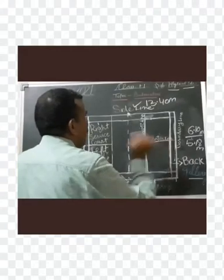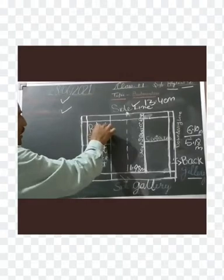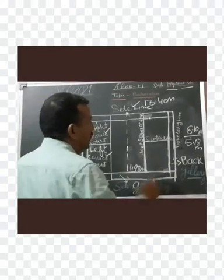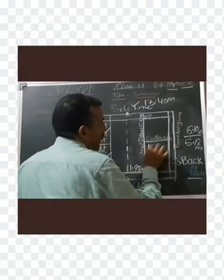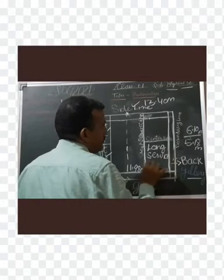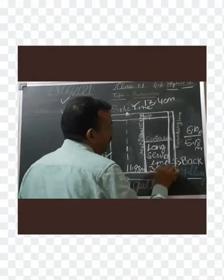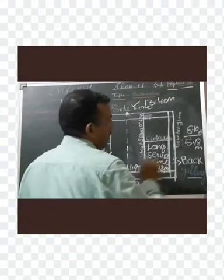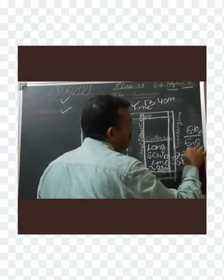The center line divides two equal parts: first is the right service court and next is the left service court. The distance from short service line to long service line is 3.98 meters. The distance of the back gallery is 2.6 feet, and the side gallery distance is 1.6 feet.